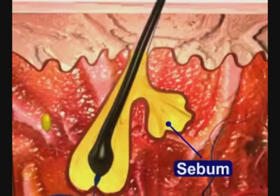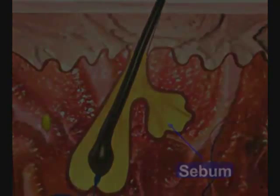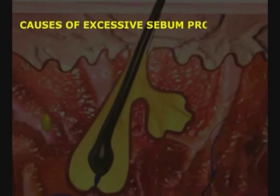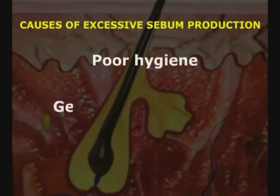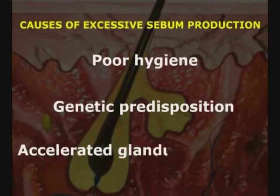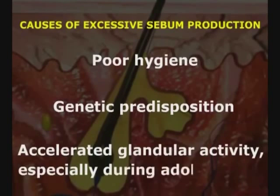Overproduction of sebum is related to the disease called acne, or commonly pimples. Sebum may collect excessively as a result of poor hygiene, genetic predisposition, or accelerated glandular activity, especially during adolescence.